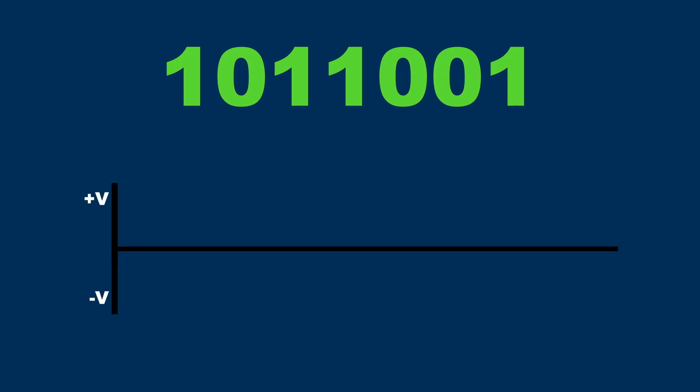The first bit is a 1, so there is no transition at the beginning of the bit time — the voltage stays at the same level, and then changes in the middle of the bit time. So if we start from the positive voltage, the signal stays at positive voltage, and in the middle it transitions to negative voltage level.